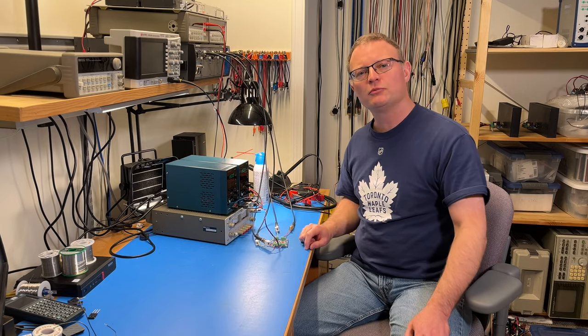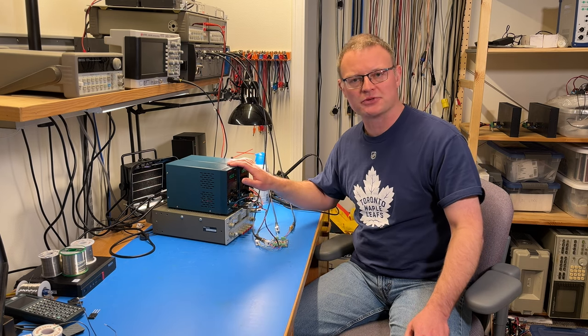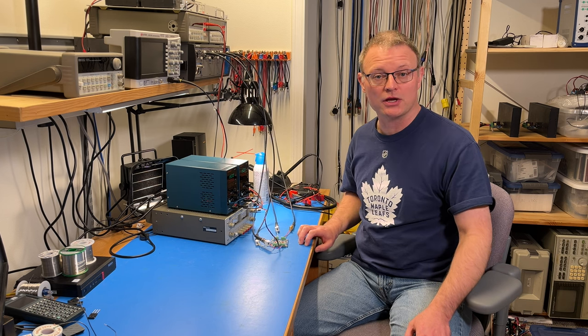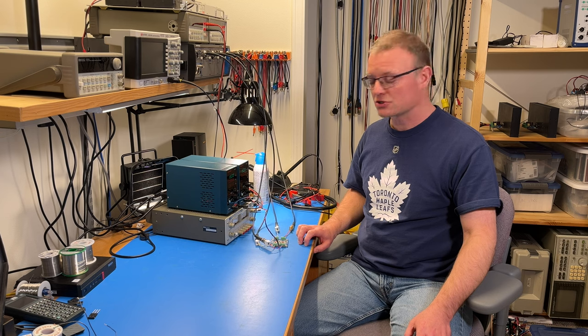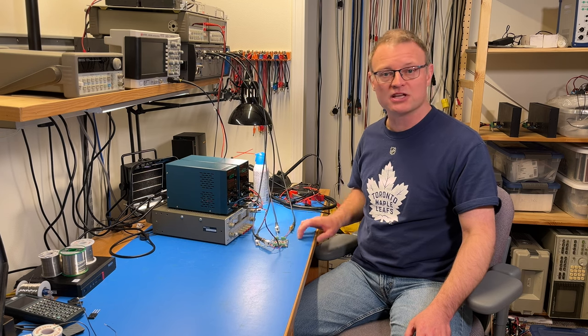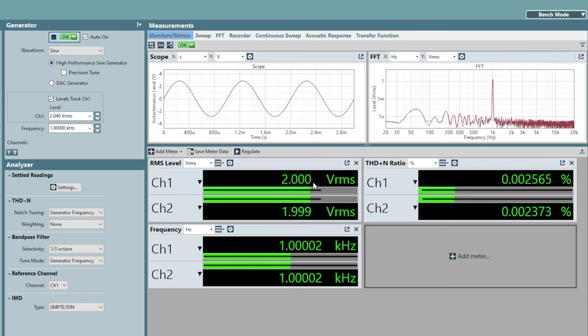This is the Neurochrome Universal Buffer. And I have it powered by these Hanmatek HM310. The Neurochrome Universal Buffer is a super high-end audio preamp building block. It can be used to convert from balanced to unbalanced and vice versa. It can also be used as a buffer from balanced to balanced and, like you see here, from unbalanced to unbalanced.